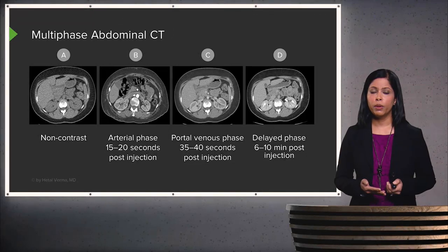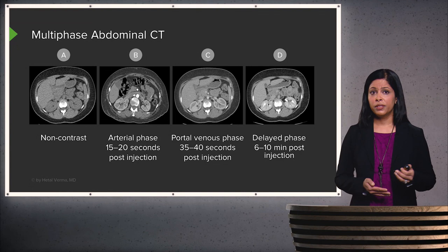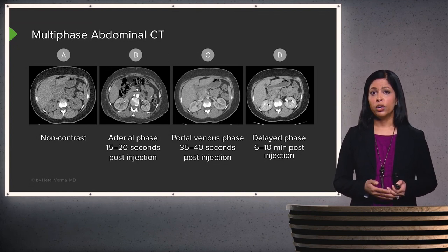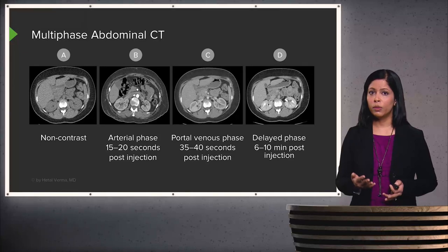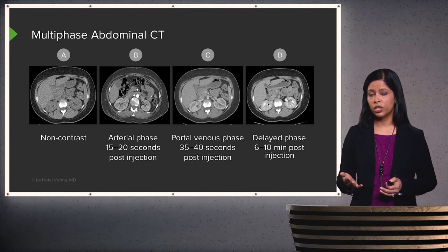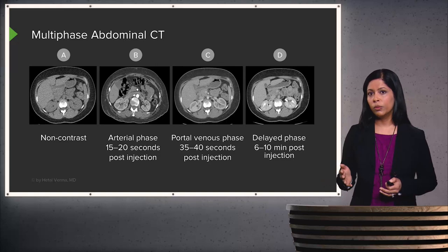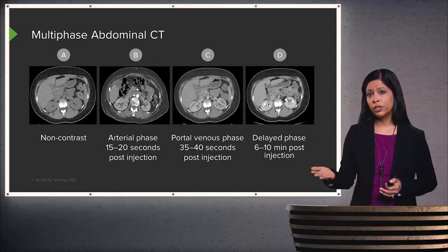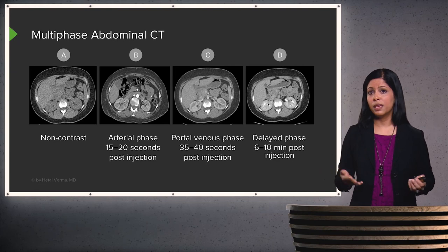This is an example of a multi-phase abdominal CT. It involves a non-contrast image on the left, an early arterial phase image performed at about 15 to 20 seconds after injection, a portal venous phase performed at about 35 to 40 seconds after injection, and then a delayed phase usually performed at about 6 to 10 minutes after injection, although this can be delayed further depending on what's being evaluated.